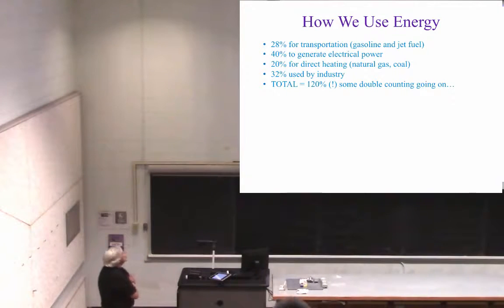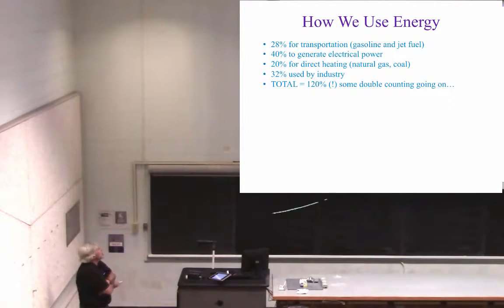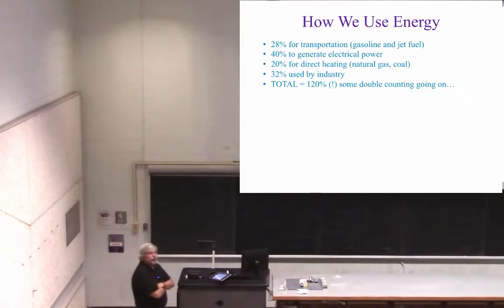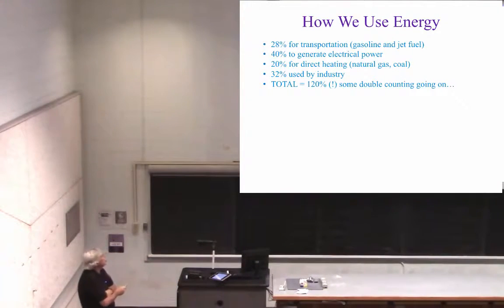All right, so this is how we use the energy in the U.S. About 28% is used for transportation. That's mostly gasoline and jet fuel. So more than a quarter of our energy consumption is just transportation.